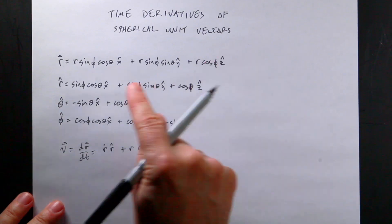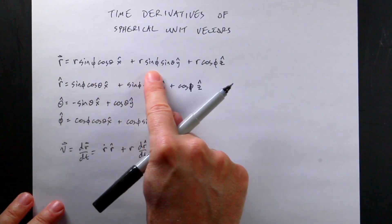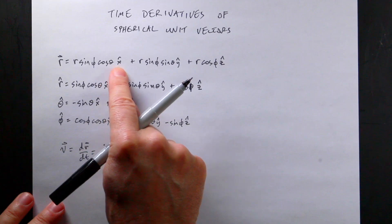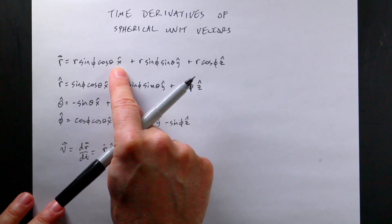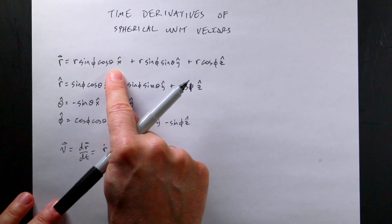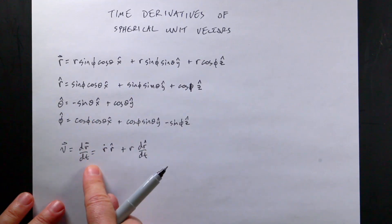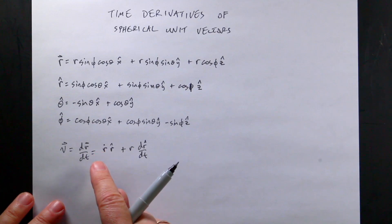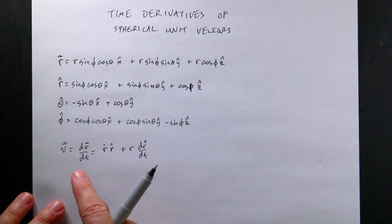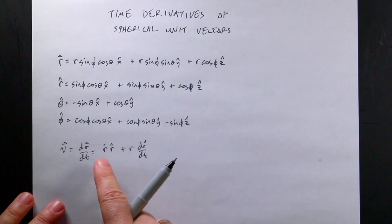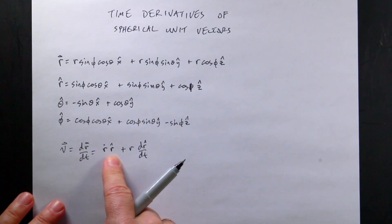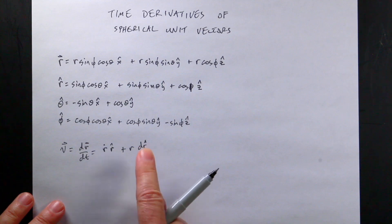To find the velocity in spherical coordinates, I need to take the derivative of the position vector with respect to time. r, phi, and theta all change with time. The velocity is dr/dt. In spherical coordinates, the position vector is just r r_hat, so when I take the derivative I get r_dot times r_hat, but then I also have to take the derivative of r_hat itself, since it changes direction. So I need r times d(r_hat)/dt.